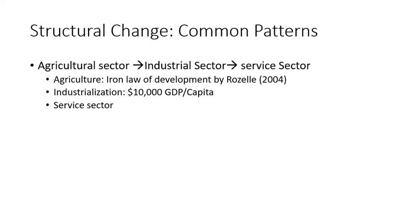Let's review a little bit about what we learned from the econ class about general structural change for any countries. All countries begin to develop with a predominantly agricultural economy — the same as the U.S. The agricultural sector will always be the major sector at the very beginning. In the early stage of development, farmers make up the bulk of the labor force and the most value added is in agriculture. As development proceeds, common patterns of structural change are observed, associated with growth away from a predominantly agricultural economy toward an industrialized and diversified economy.